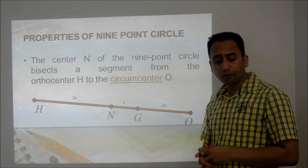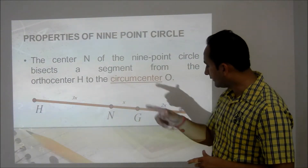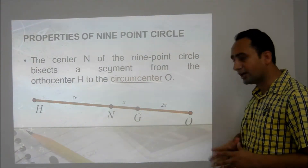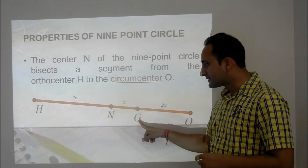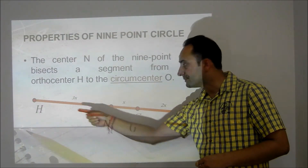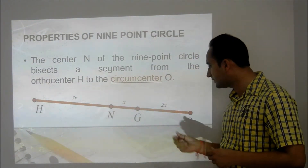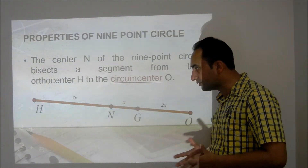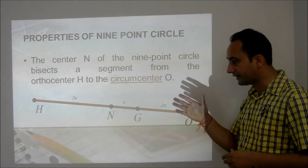The 9-point center N bisects the line segment joining the orthocenter H and circumcenter O, meaning N is exactly the midpoint of H and O. Moreover, the centroid G divides Euler's line in the ratio 2:1, so HG:GO = 2:1. More specifically, if we take NG as X, then GO will be X and HG will be 2X, so any ratio among H, N, G, O can be calculated using distances X, 2X, and 3X.